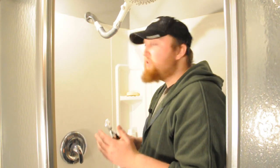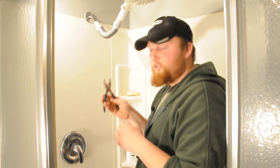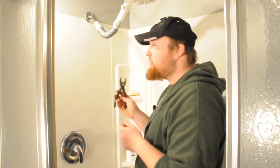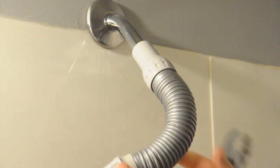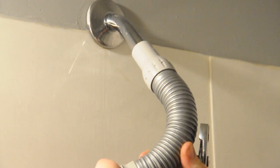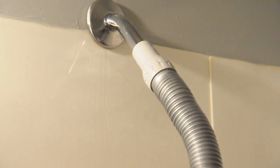The first thing you're going to do is remove the old shower fixture with your standard pair of pliers. Do this by turning counterclockwise until the shower fixture comes off.